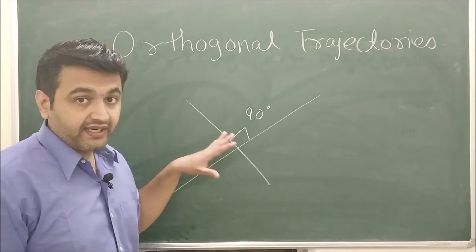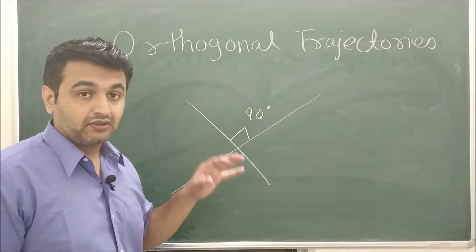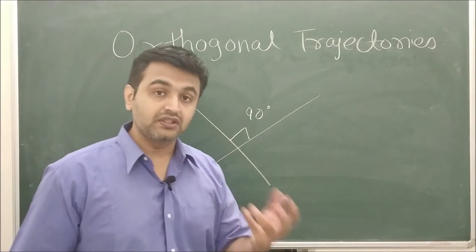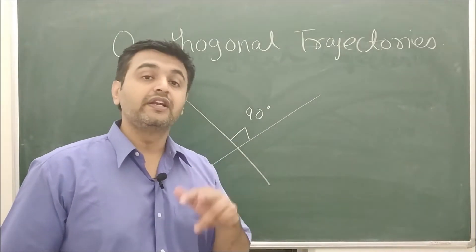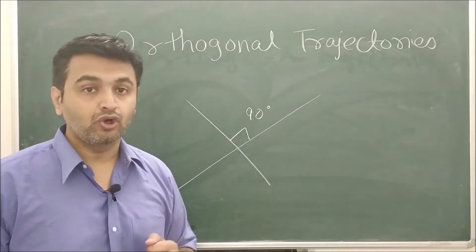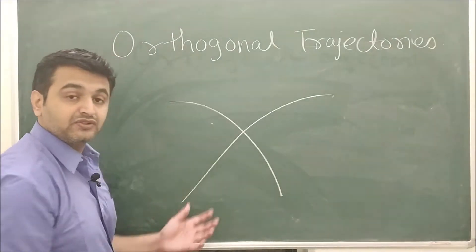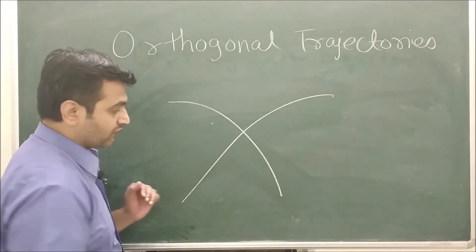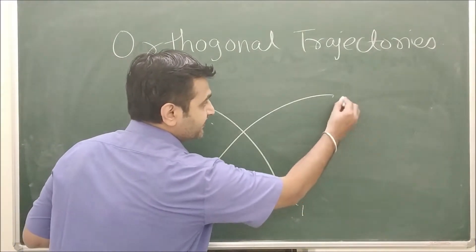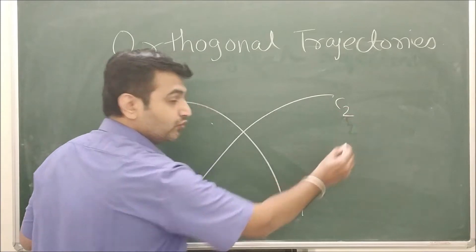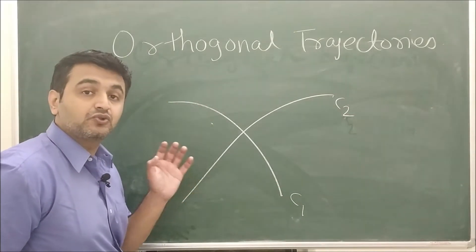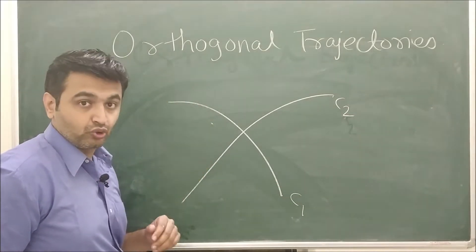That was regarding lines. Now the question is, when you have two curves, when do you say that those two curves are orthogonal? Suppose you have two curves — this is curve one and this is curve two. When are these two curves orthogonal?